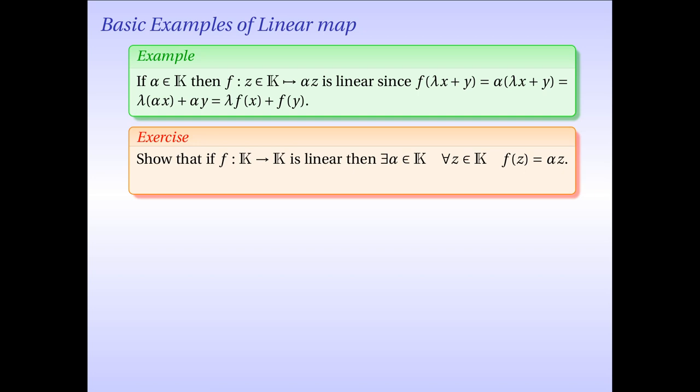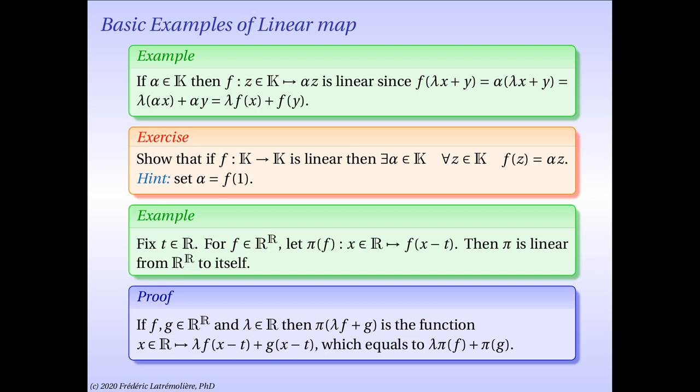In fact, it is an exercise to prove that if you have a map from a field to itself which is linear when we regard the field as a vector space over itself, then such a map must be of the type in the example above. There must be an alpha in K such that f of z is alpha z for all z in K. Here's a hint: simply note that alpha must be f of 1. So linear maps from a field to itself are not extraordinarily interesting, but things become much more interesting when you go to more complicated vector spaces.